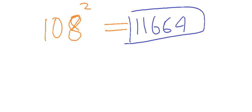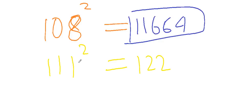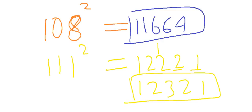Let's say we have the number 111 and want to calculate its square. The difference is 11, so we add double of 11 to 100: double of 11 is 22, giving us 122. Then the square of 11 is 121. Since we only have two spaces, we carry the 1, giving us 1, 2, 3, 2, 1. So the answer is 12321.